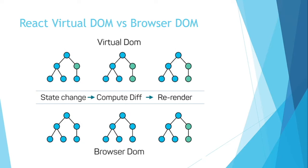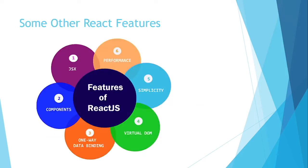In the browser DOM, there is no state-change check or difference computation — it directly renders all elements, which wastes memory. That's why we use the Virtual DOM in React. There are other features too, and you can get an idea from this chart — one of which is JSX.